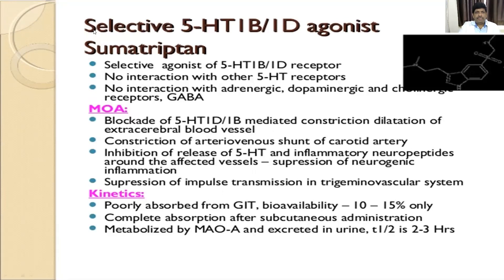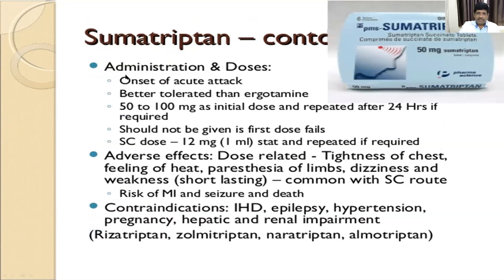Sumatriptan is a selective 5-HT1B and 1D agonist. It has no interaction with adrenergic, dopaminergic, cholinergic receptors, or GABA, so adverse effects are lesser. Mechanism: it blocks receptor-mediated vasoconstriction, causes dilatation of extracerebral blood vessels, constriction of arteriovenous channels of the carotid artery, inhibition of release of 5-HT, and suppression of impulse transmission in the trigeminovascular system. It is better tolerated than ergotamine, used at onset of an acute attack, and 50 to 100 mg can be the starting dose.